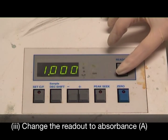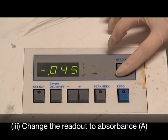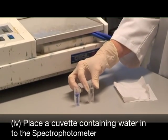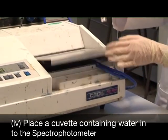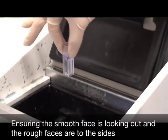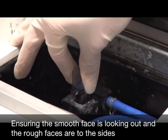Thirdly, change the readout to absorbance. This has been abbreviated to capital A. Now place a cuvette containing water into the spectrophotometer, ensuring that the smooth face is looking out and that the rough faces are to the sides.